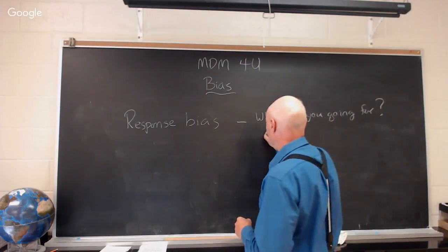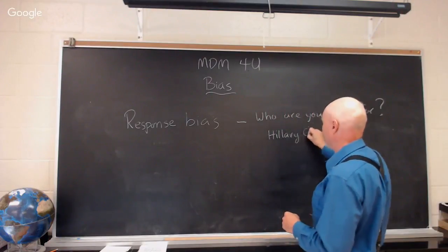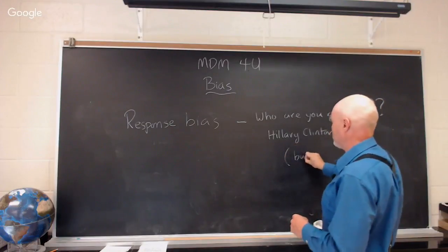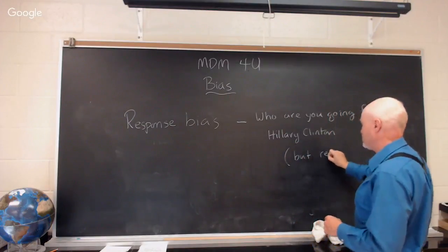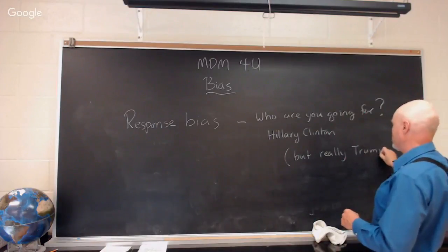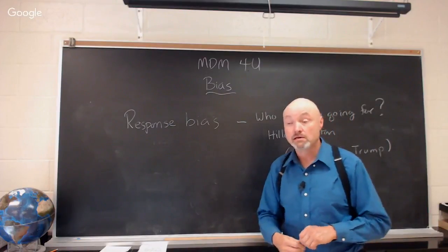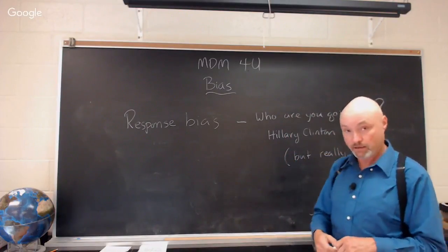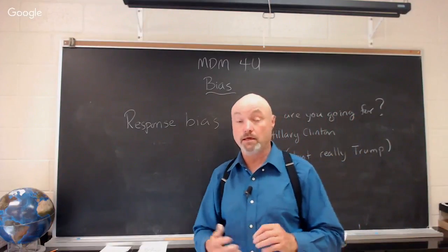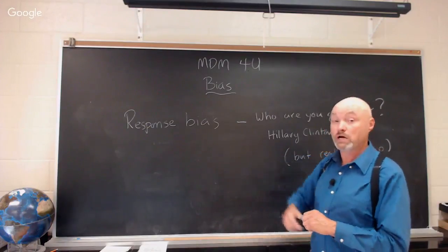And so they'd say, 'Oh, I'm going to vote for Hillary Clinton.' But really, they were going to vote for Donald Trump. They just didn't want to admit it to the person on the phone. That's an example of response bias. Another example would be when I ask people if they've done their homework, and then I look at them, and they nod yes.